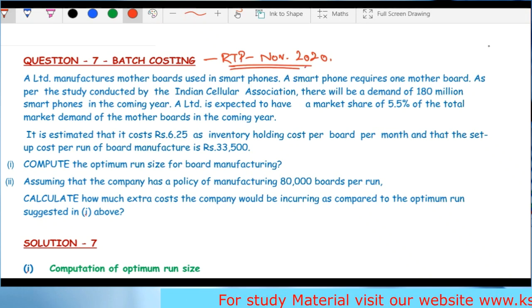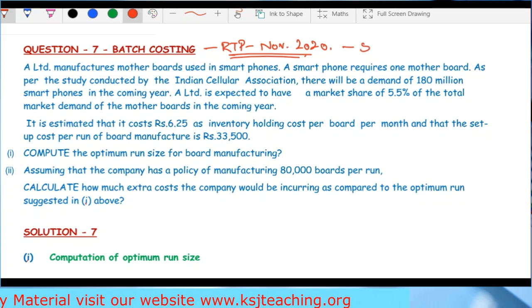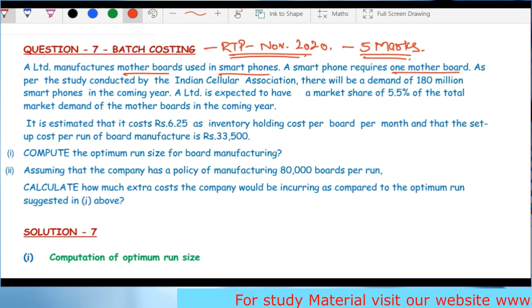This is a very easy question. Batch costing itself is a very easy chapter, and this question, if it comes, will be maximum five marks.